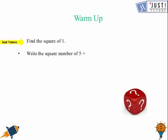Here we need to find the square of 1. Square of 1 is 1 itself and here you need to write the square number of 5. So 5 times 5 which will give you 25, that's the square number. If you got them as the answer, that's really amazing because that's the right answer.